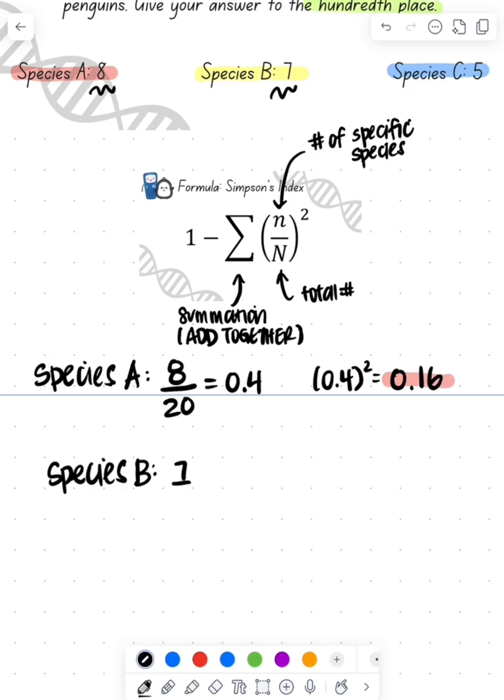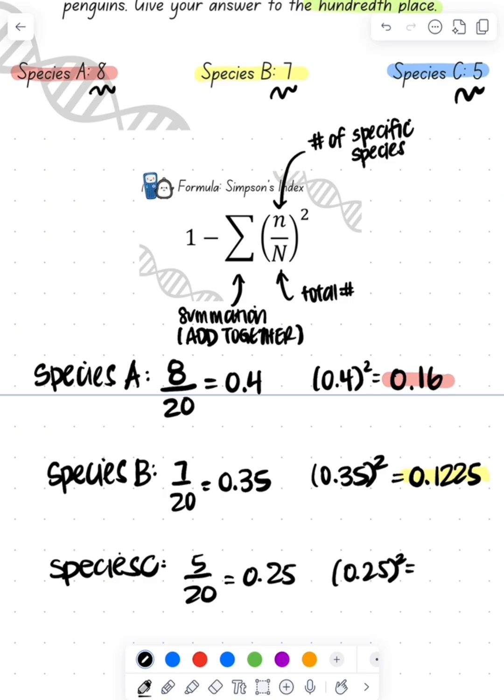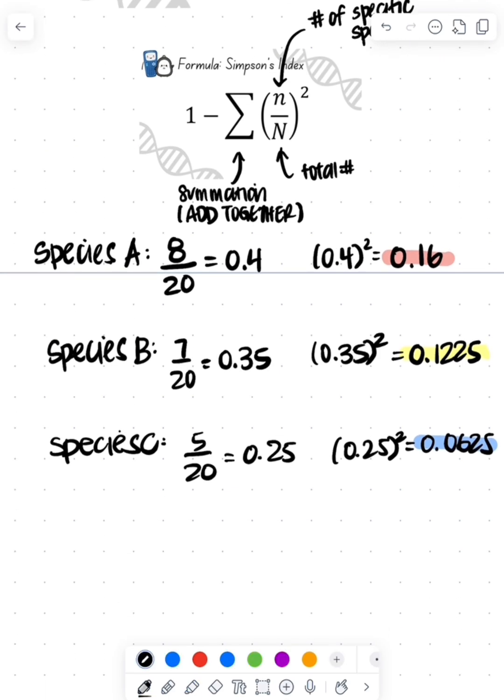Species B has 7, so 7 over 20 is 0.35. If we square that, we're going to get 0.1225. Let's color code it as well. Species C has 5 individuals, so 5 over 20 is going to give me 0.25. If I square that, it's going to give me 0.0625, and let's color code it.